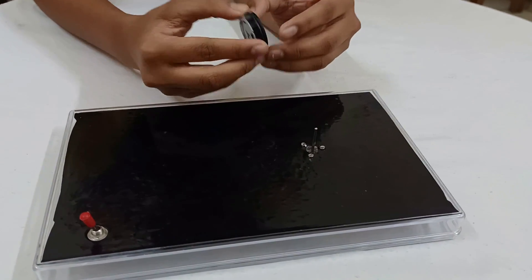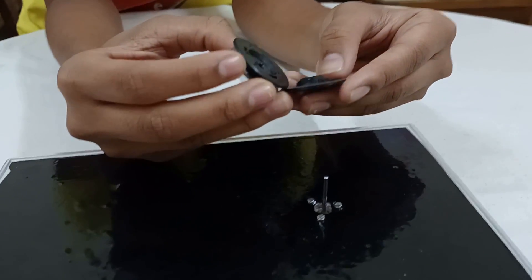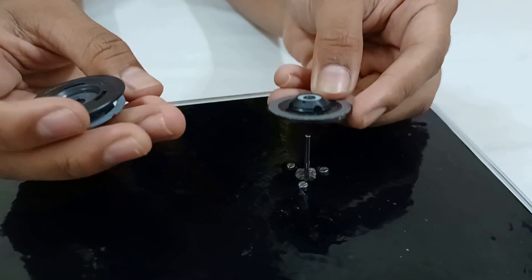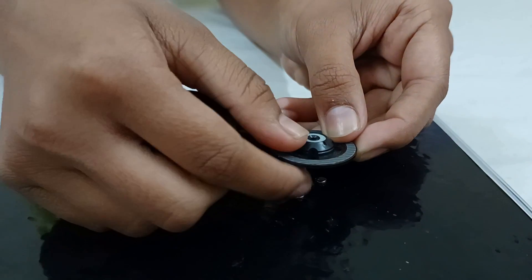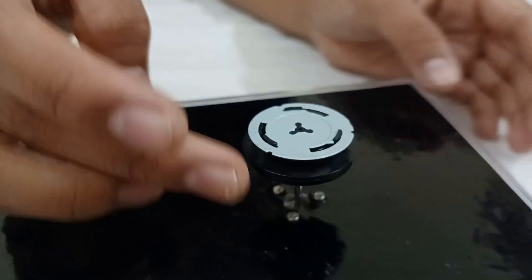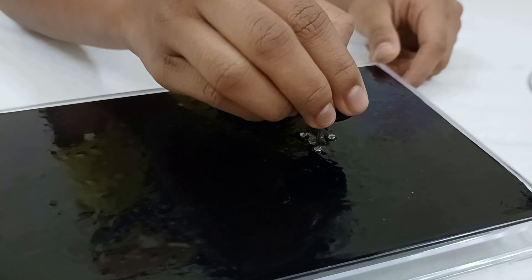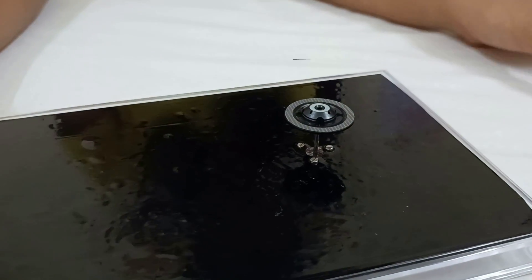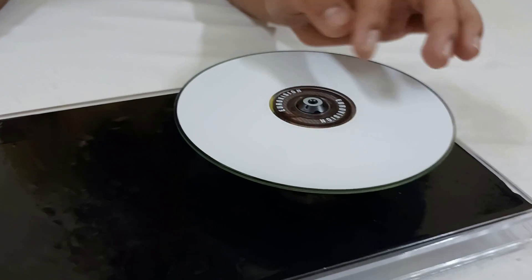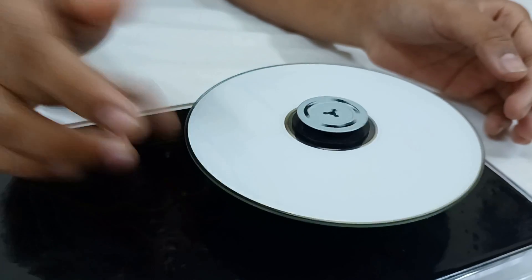Now we will fit the CD mount to the motor shaft. Earlier I have told you that the CD mount has two parts. Now we will fit the lower part to the shaft, like this. Now remove the top. Insert the CD. Check whether the CD is sitting properly or not. And now lock it. Now it's fine.